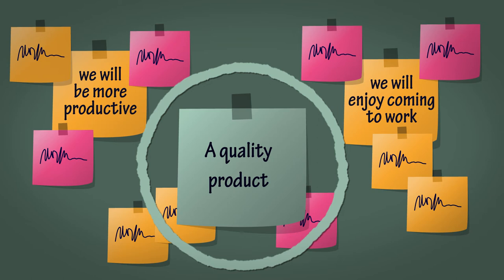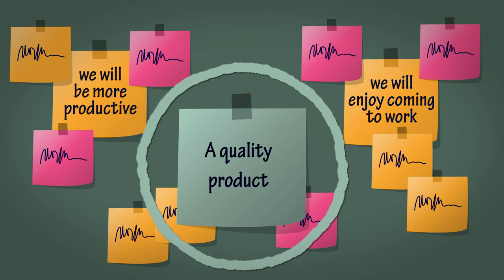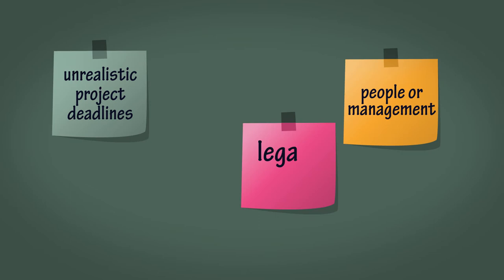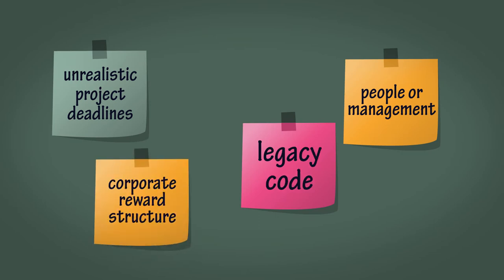Next, ask everyone to go back to their smaller groups and follow a similar process for what obstacles they can imagine getting in the way of them becoming a successful team. Suggestions for obstacles might include specific people or management generally. Unrealistic project deadlines, legacy code, the corporate reward structure and working hours might come up.